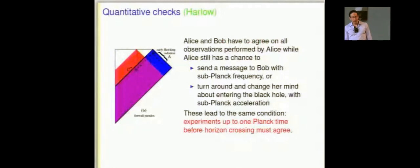Now, I oversimplified slightly. There are still some quantitative checks that one should do to see that this really works out. Alice, on her way in, for some time, still has a chance to send a message to Bob about quanta she encounters on the way in. In fact, she could just change her mind and decide not to fall in after she measures some of these quanta, accelerate really fast, stop and go back out. And so experiments, it turns out, up to one Planck time before Alice's free fall hits the horizon, those experiments have to agree between the two observers.